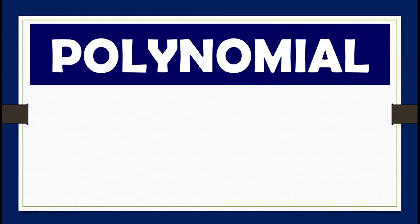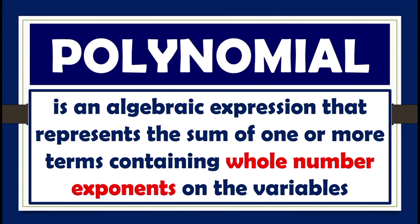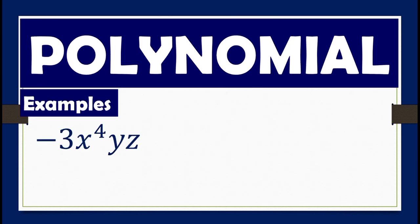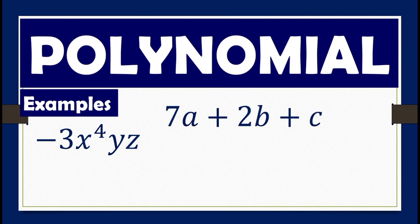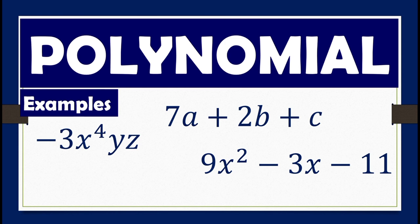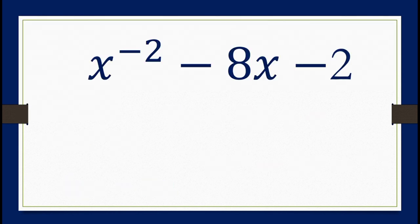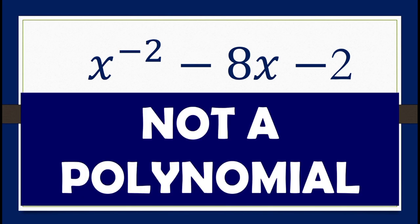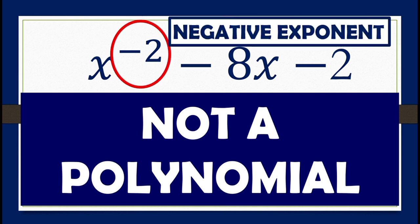To start with, let's define polynomial. A polynomial is an algebraic expression that represents the sum of one or more terms containing whole number exponents on the variables. Examples: negative 3x to the fourth yz; 7a plus 2b plus c; 9x squared minus 3x minus 11; and 4m minus 5n. Note that x raised to negative 2 minus 8x minus 2 is not a polynomial because it has a negative exponent.